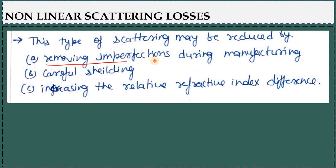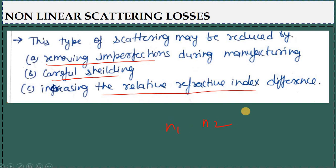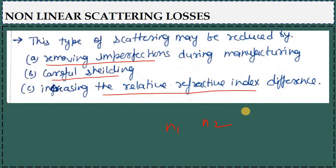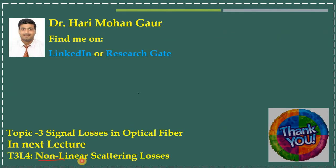To reduce scattering losses: remove imperfections carefully, do careful shielding, and keep the relative refractive index difference between N1 and N2 — that is, between core and cladding — sufficiently large. Notes have been provided on Google Classroom. In the next lecture we will study non-linear scattering, which has two types: SBS and SRS. Till then, take care, see you.